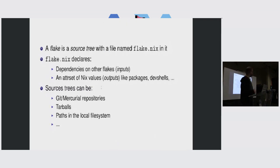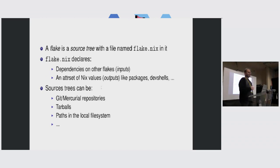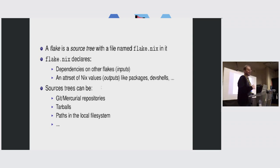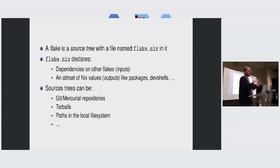Just a reminder of what flakes are for people who have never seen them. A flake is basically just a source tree, like a git repository, that has a file named flake.nix in it. This is a standard way of packaging projects that have Nix expressions in them, where you previously might have a default.nix or a shell.nix — flake.nix standardizes that.